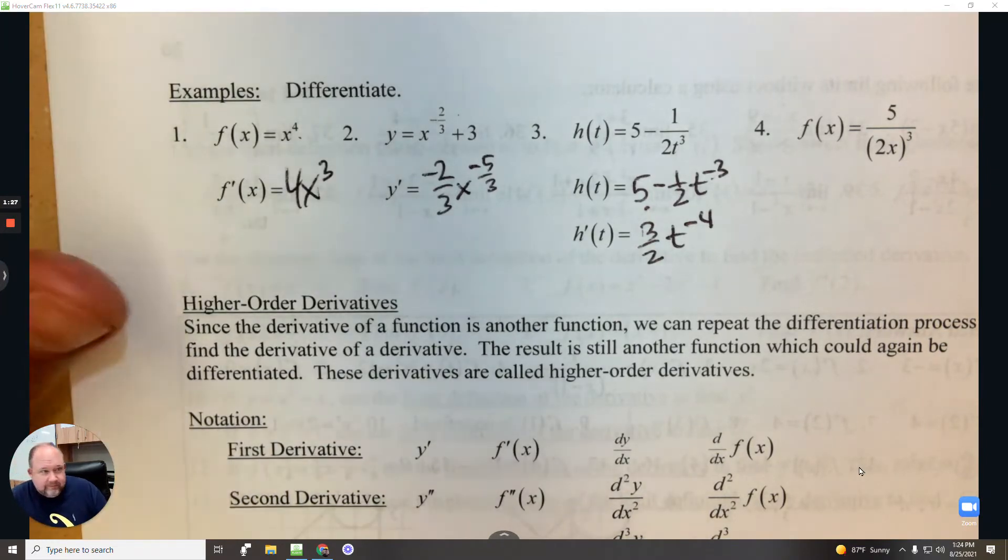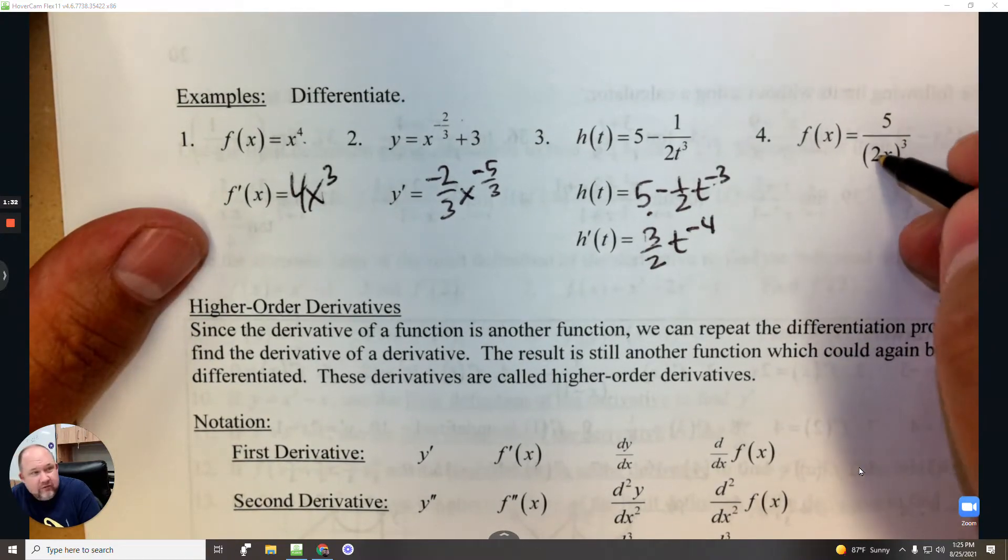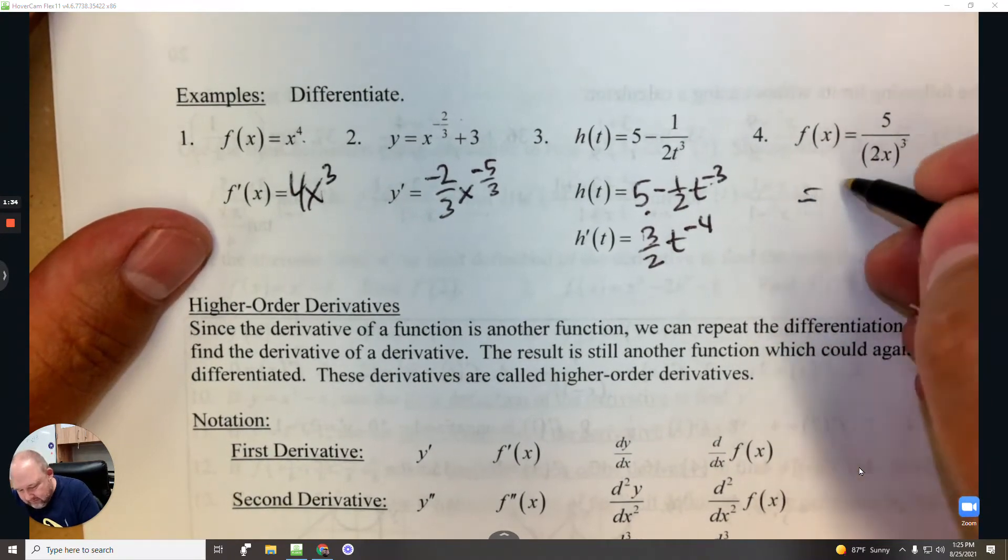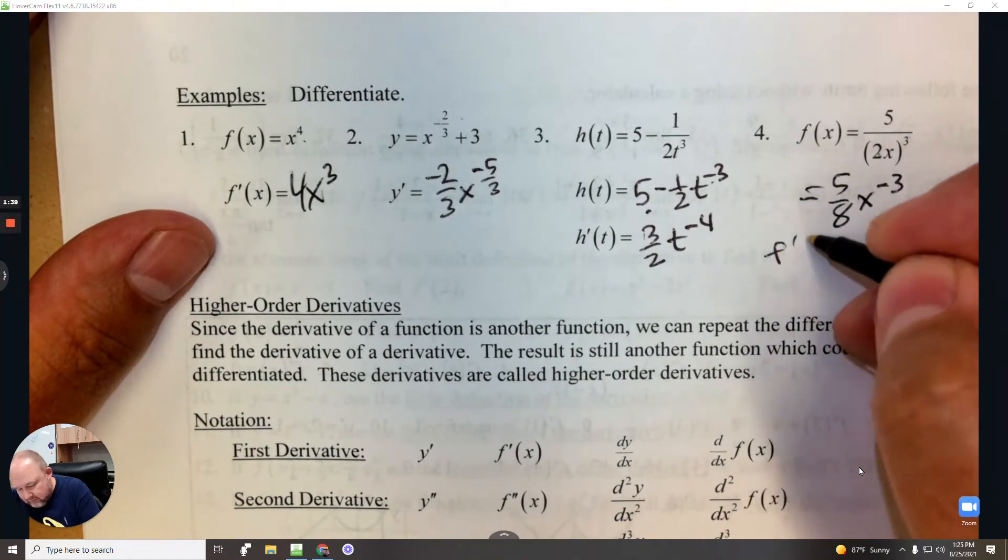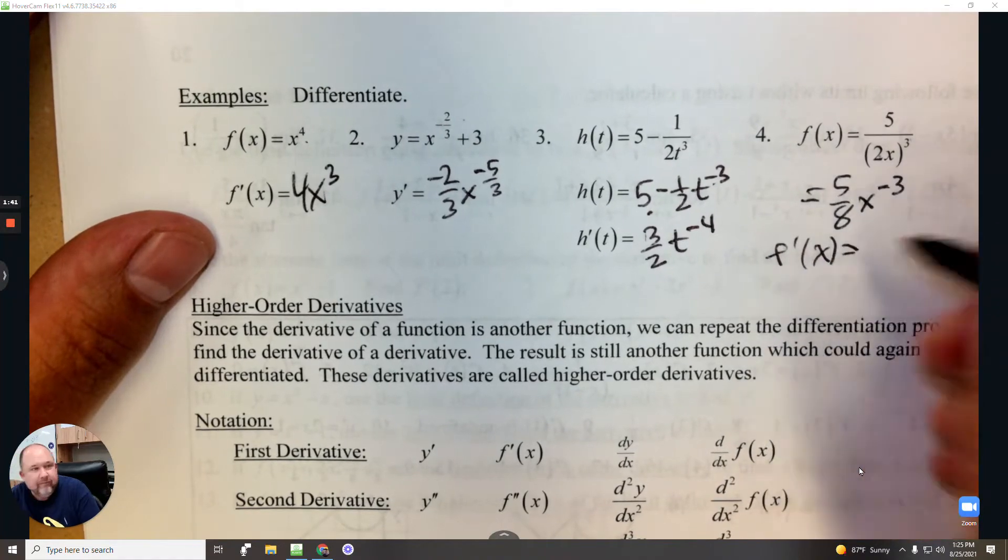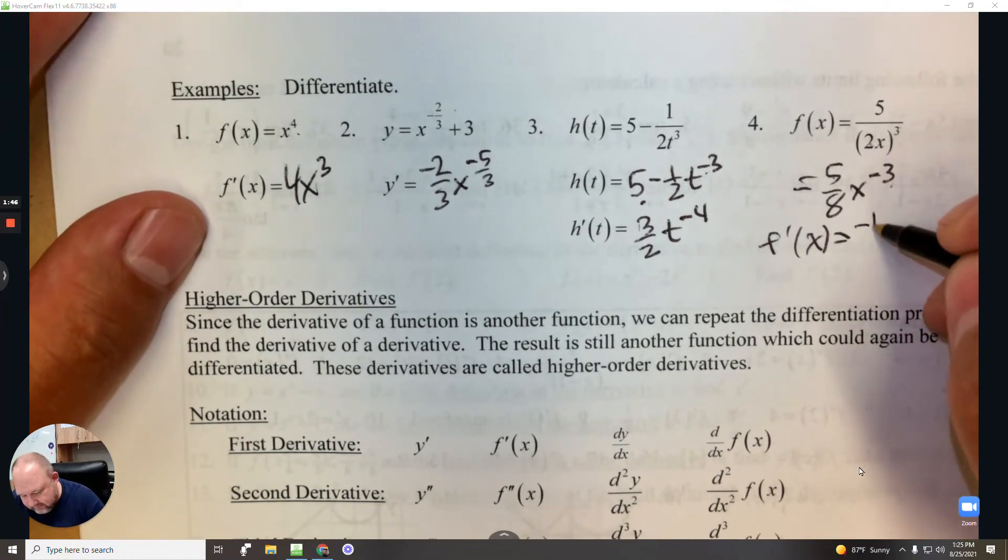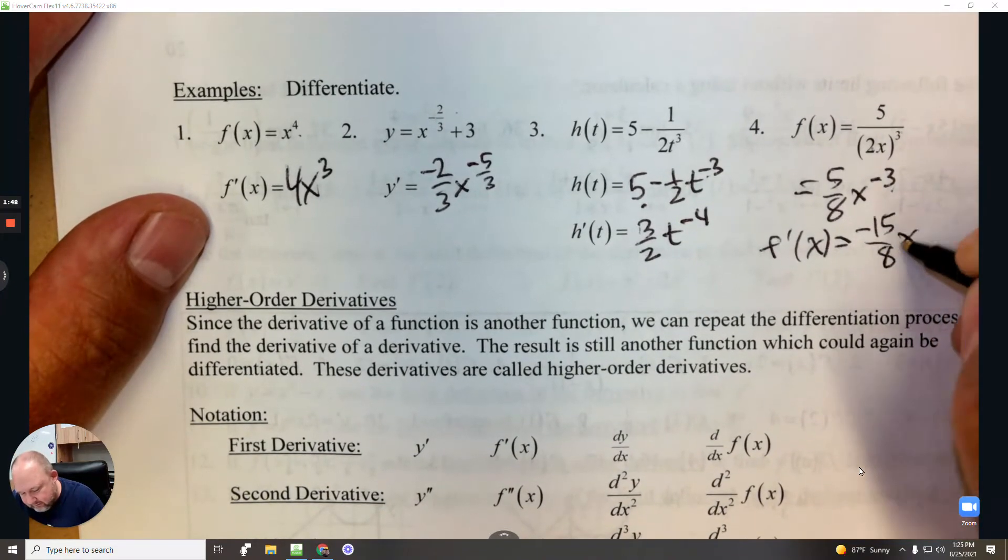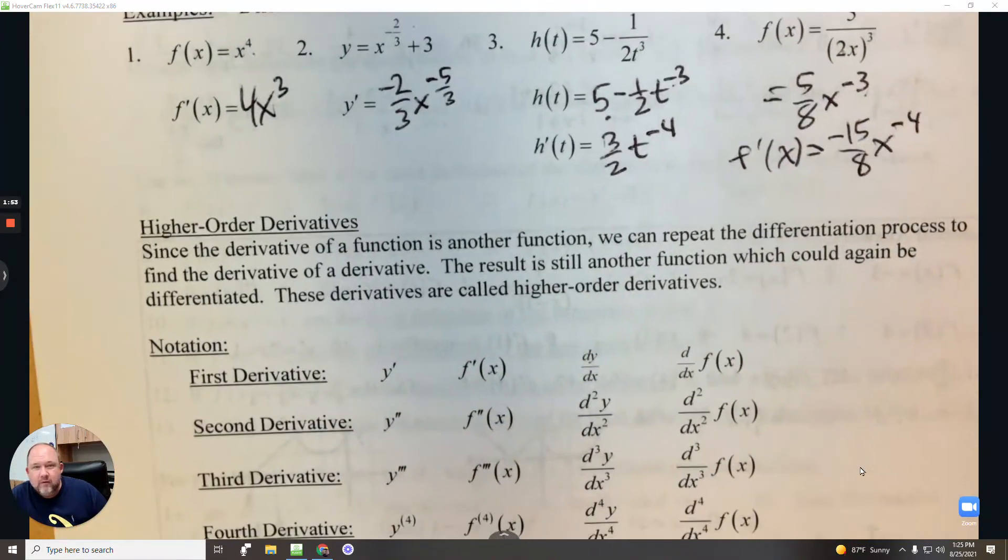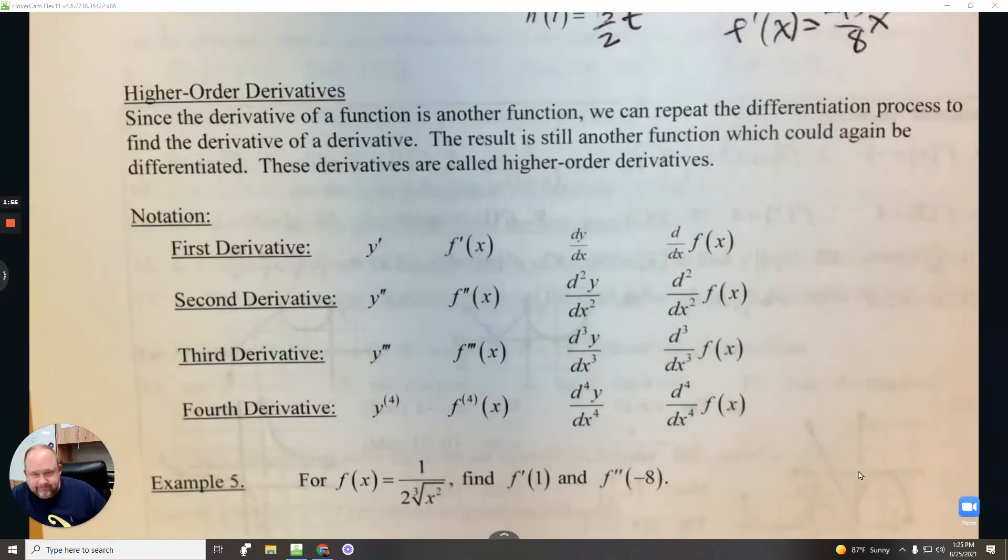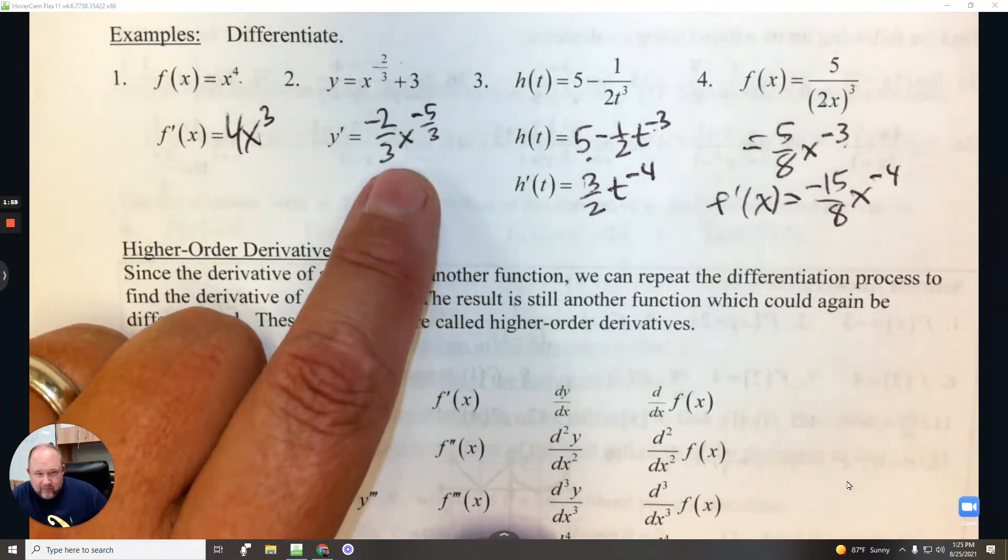For number 4, again we're going to write this as 2 cubed is 8, so 5 over 8 and then x to the negative 3. So the derivative would be negative 3 times 5, which is negative 15 over 8, and subtract 1 to the exponent. That's just a simple power rule, and sometimes you have to use algebra to write it as an exponent so you can do the power rule.